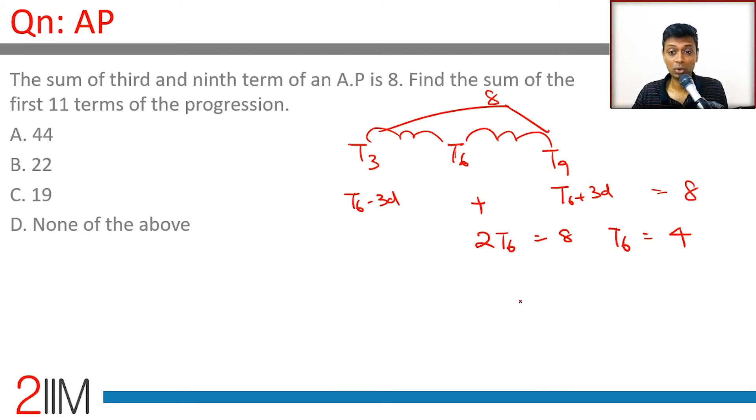The sixth term is 4. You have to add sum of 11 terms: T1, T2, till T6, till T11.